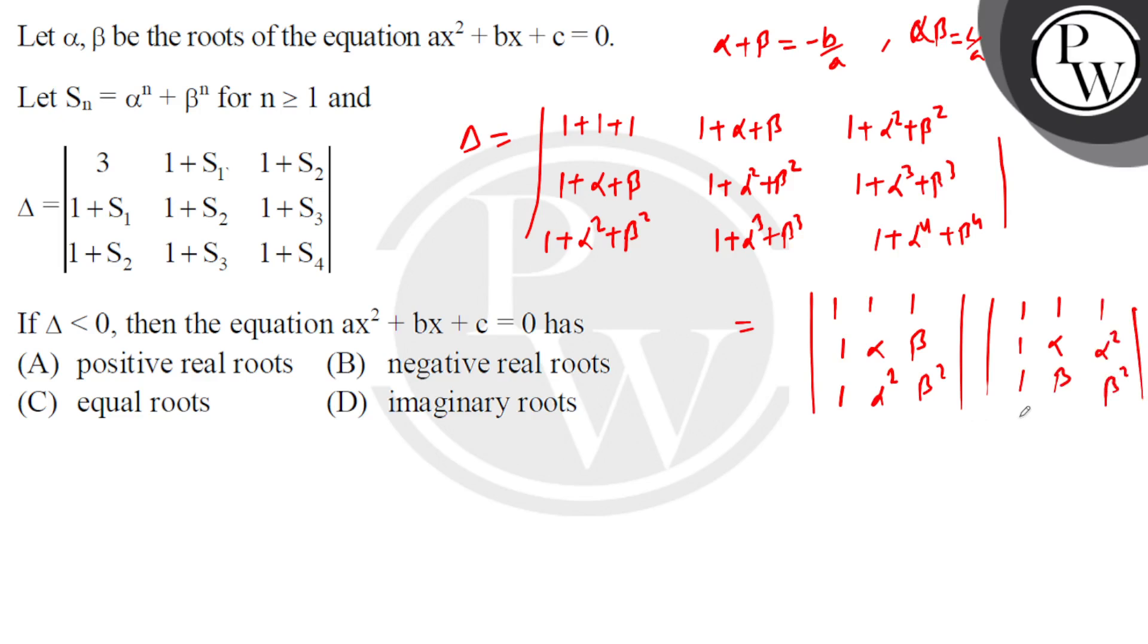This is basically the transpose, so A times A transpose gives this result. That can be written as the determinant with rows |1, 1, 1|, |1, α, β|, |1, α², β²|, the whole squared.